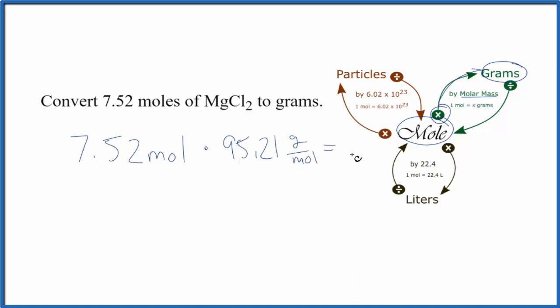When we multiply these two numbers together, we have moles up here and down here, they cancel out. We're going to be left with grams. We'll have 715.98 grams of magnesium chloride.